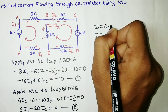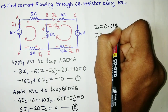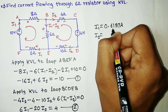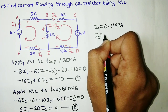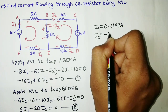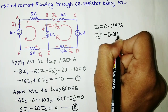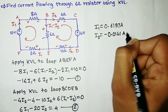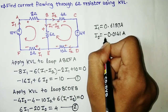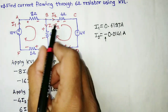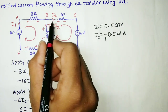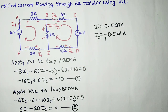For I1 you get 0.6197 amperes, and I2 equals minus 0.0141 amperes. Remember the negative sign — it indicates that the assumed direction of I2 is wrong, meaning I2 is actually flowing in the opposite direction. However, this does not affect the solution.